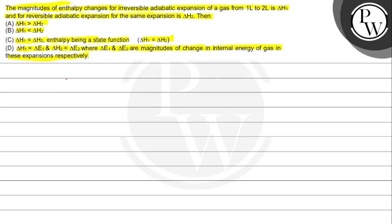The key concept for this question involves enthalpy, which accounts for internal energy and the product of pressure and volume. So delta H is equal to delta E plus P*delta V.